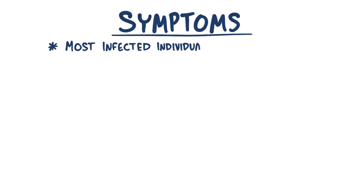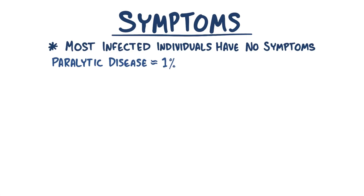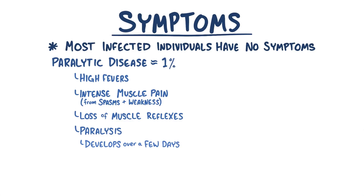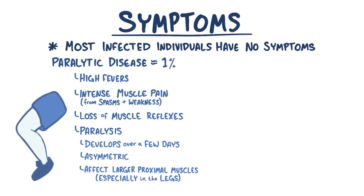Most individuals infected by poliovirus have no symptoms. In fact, polio only causes paralytic disease about 1% of the time. Symptoms of paralytic disease from polio include high fevers, intense muscle pain from spasms and weakness, loss of muscle reflexes, and eventually paralysis. Usually the paralysis develops over a few days and is asymmetric, most often affecting larger proximal muscles, especially in the legs, like the thighs.